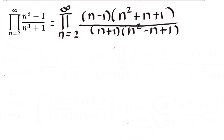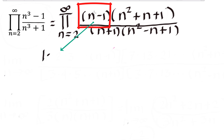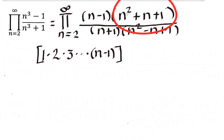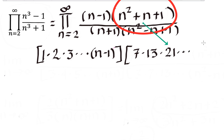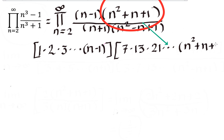Let's take some values for n, iterating from 2 to infinity. For the first factor in the numerator: if n equals 2, it becomes 1; if n equals 3, it's 2; if n equals 4, it's 3 — and this pattern repeats until n minus 1. For the second factor in the numerator: if n equals 2, that's 4 plus 2 plus 1 equals 7; if n equals 3, that's 9 plus 3 plus 1 equals 13; if n equals 4, that's 16 plus 4 plus 1 equals 21 — continuing until n squared plus n plus 1.